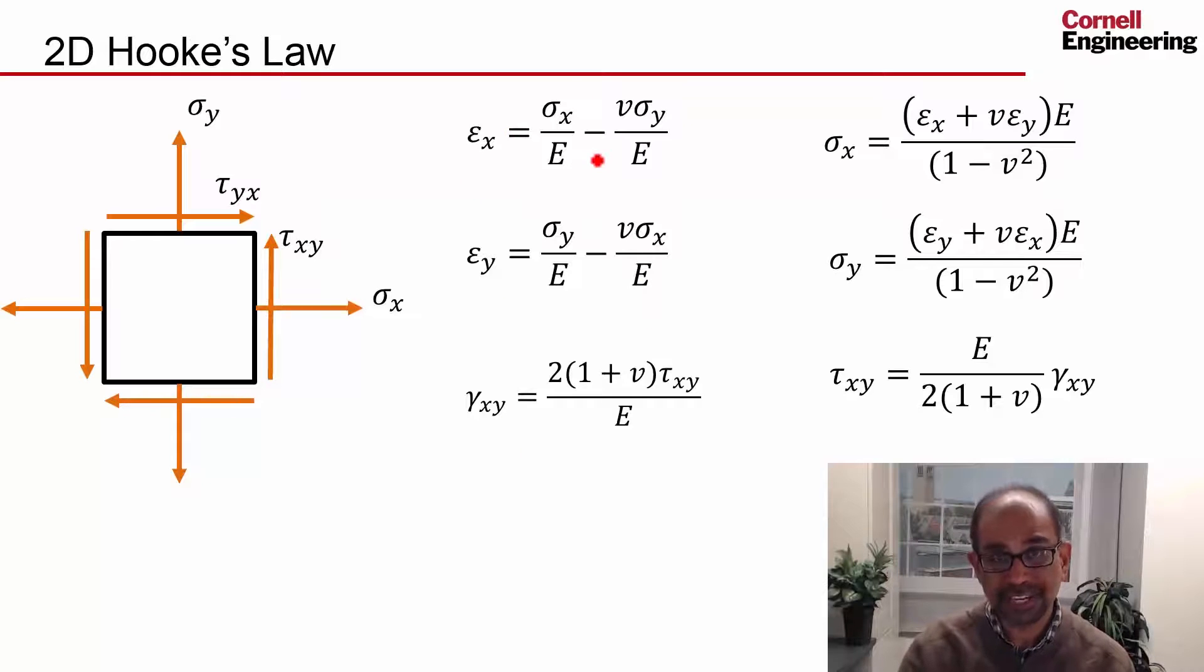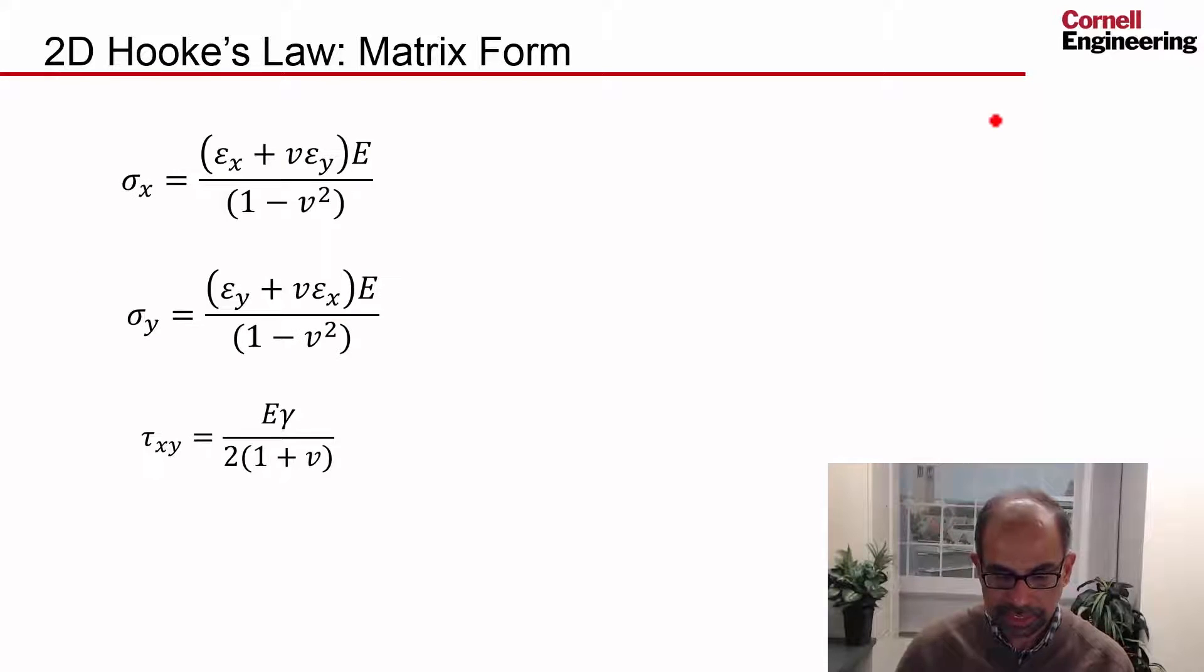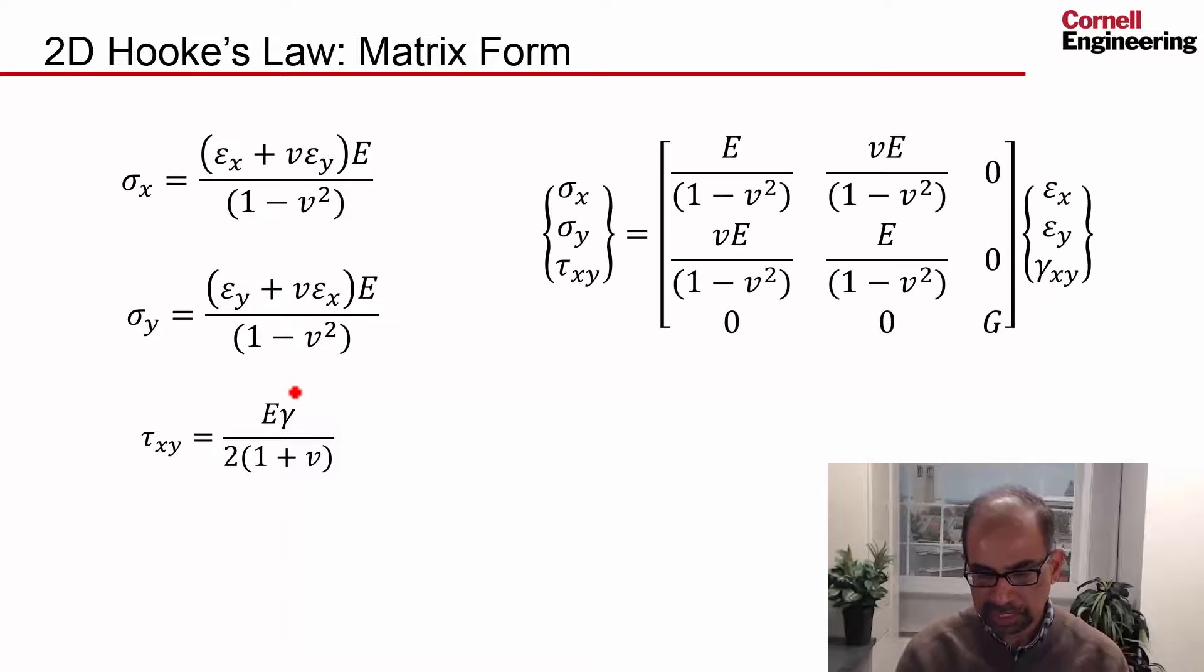One can write either the compliance form or the stiffness form in matrix notation. These are just the three equations in the stiffness form, and here is all the same equations written in the matrix form. Here I've just written this in terms of G as E over 2(1 plus nu).